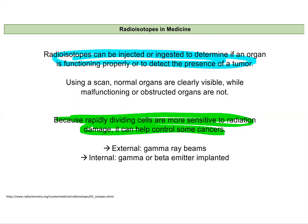Rapidly dividing cells are extra sensitive to radioactive damage. So that means that if a sample of tissue with cancerous cells and normal cells were exposed to radiation, the cancerous cells would be damaged more. We take advantage of this to treat cancer.